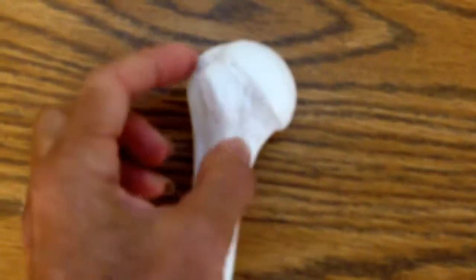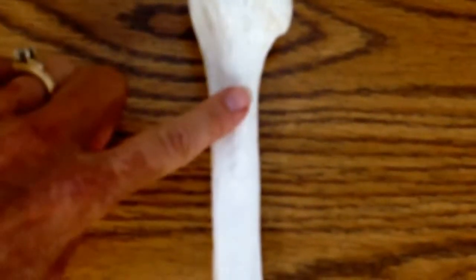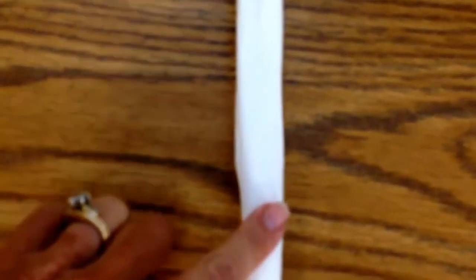This is where the biceps tendon comes through and you can actually feel it. Coming down the shaft there is a little bump which would be the deltoid tuberosity where the deltoid fits in.